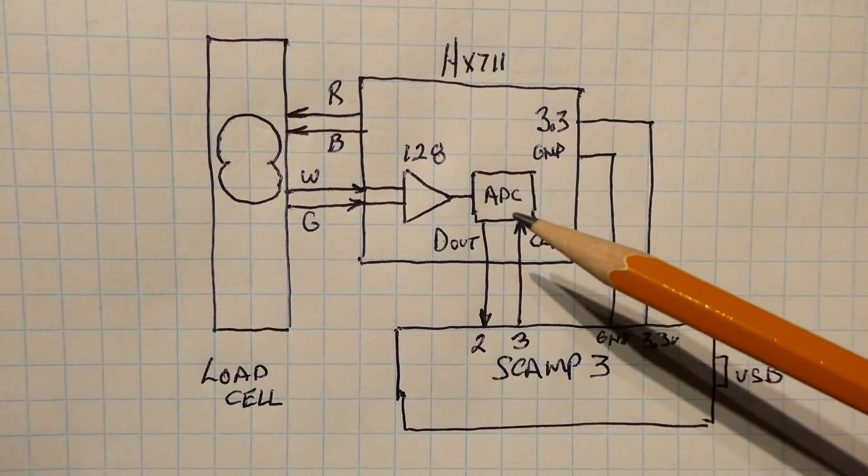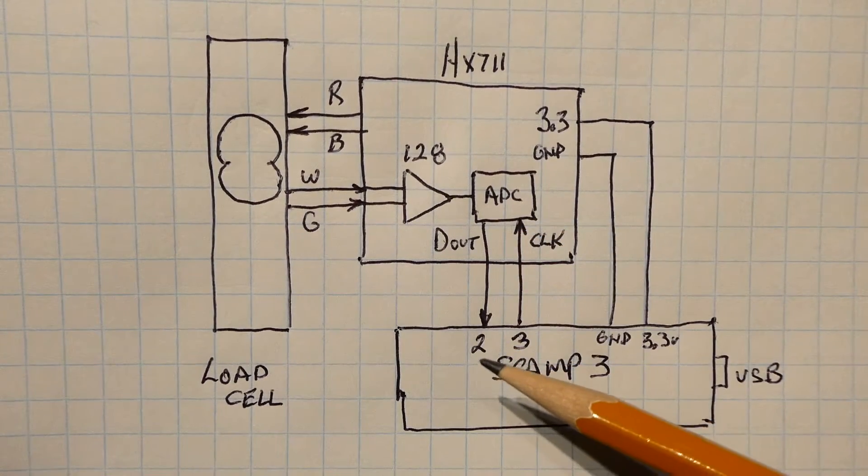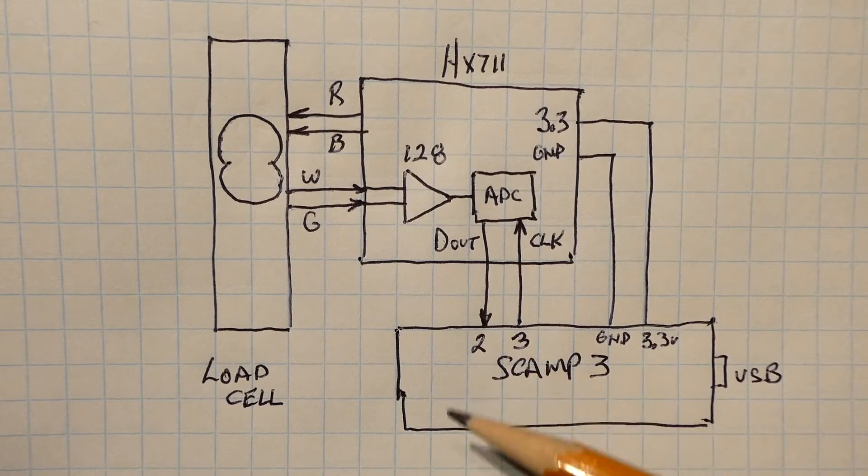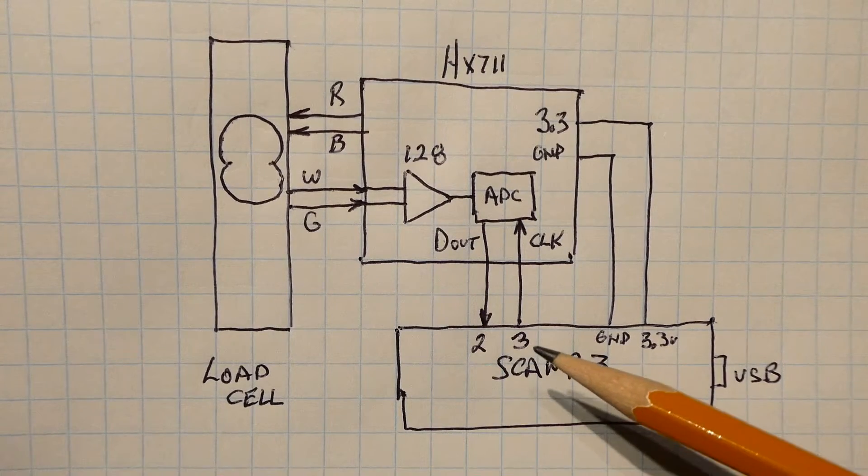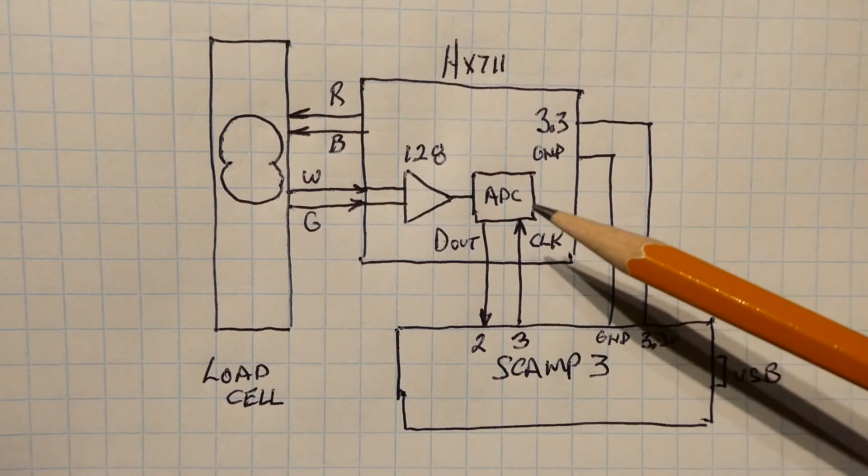Now the output of the ADC, D out, is fed into the GPIO pin 2 of the SCAMP3 board, and pin 3 of the SCAMP3 board GPIO, that's a clock which is feeding the ADC.